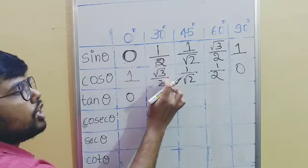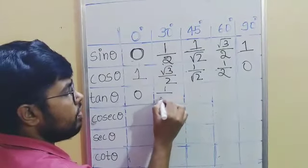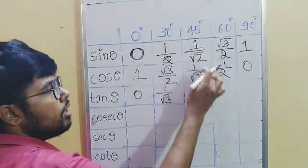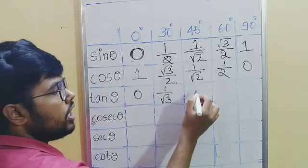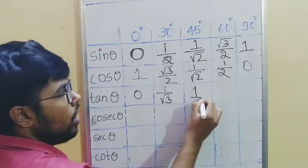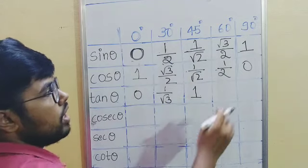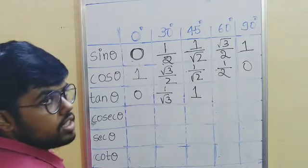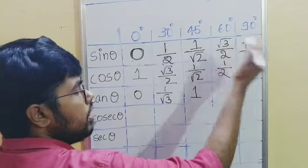three. Here both are same, everything cancels off, you just remain with one. Here if you see, the denominators are same, so it cancels off, you'll be left with root three by one, which is root three itself.